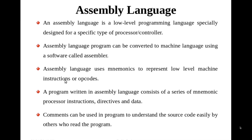A program written in assembly language consists of a series of mnemonics, processor instructions, directives, and data. Directives are statements which give directions to the assembler — where to locate the codes, when to start assembling, where to stop assembling. All such directions are given by these statements, and such statements are called assembler directives.